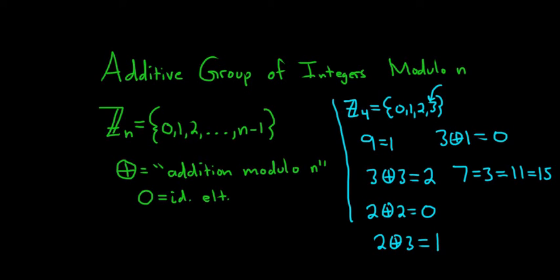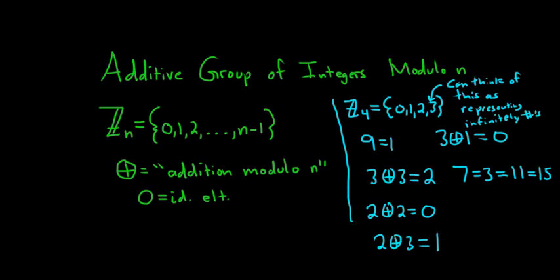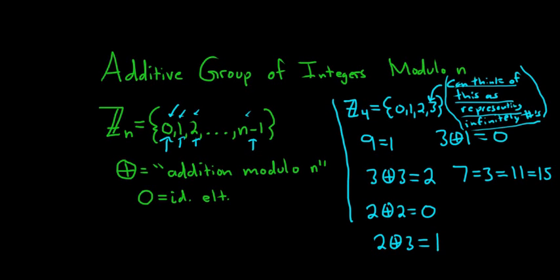So 3 can be thought of as representing infinitely many numbers. The reason I mention this is that some textbooks do this a little differently — instead of using the unique remainders guaranteed by the division algorithm, they think of these not as numbers but as equivalence classes, where any of the infinitely many numbers could be a representative of that class. For simplicity, I personally think it's easier just to use these remainder numbers.